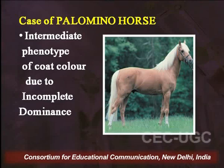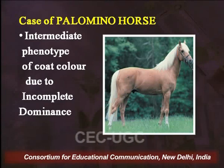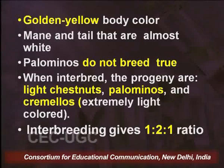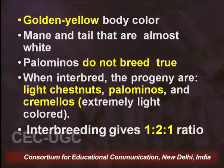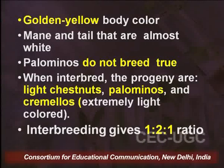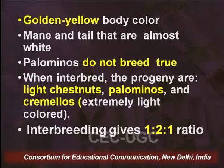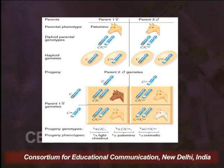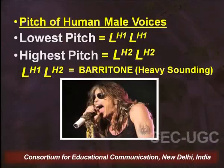There is a very interesting example of the palomino horse. This beautiful horse has a different body colour with a golden yellow body and an absolutely white tail. Palominos, if bred, will never breed true and will give rise to progeny of three different types — only one parental type being palomino, along with light chestnut and cremello. Again the ratio comes to 1:2:1, and the checkerboard indicates that one allele may not be haplosufficient, requiring both alleles to produce the character.